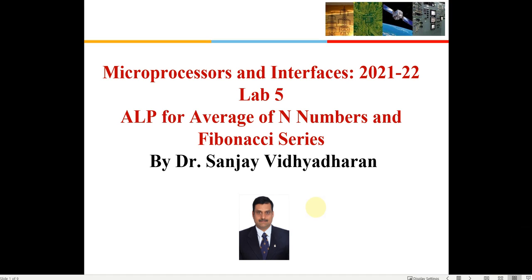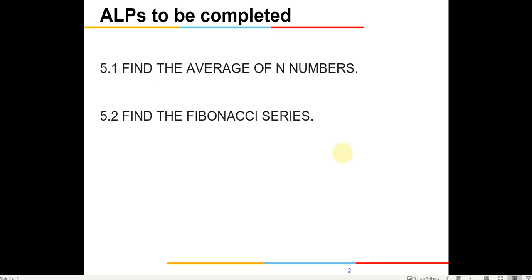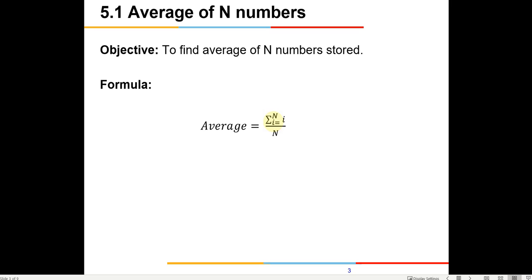Let me explain the task for the next lab. You essentially have to write two programs: one is an ALP for the average of N numbers, and the other is to generate a Fibonacci series. The first one is to find the average of N numbers, and the second is to find the Fibonacci series. These are the two problem statements to be done. We know that average is the sum of all the numbers divided by the total number of numbers in the series.